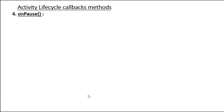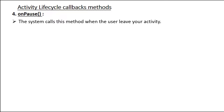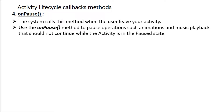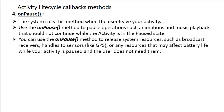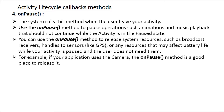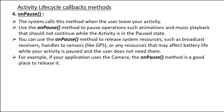The fourth method is onPause. The system calls this method when the user leaves your activity. Use onPause to pause operations such as animations and music playback that should not continue while the activity is paused. You can also use it to release system resources such as broadcast receivers, sensors like GPS, or any other resources that may affect battery life while your activity is paused.